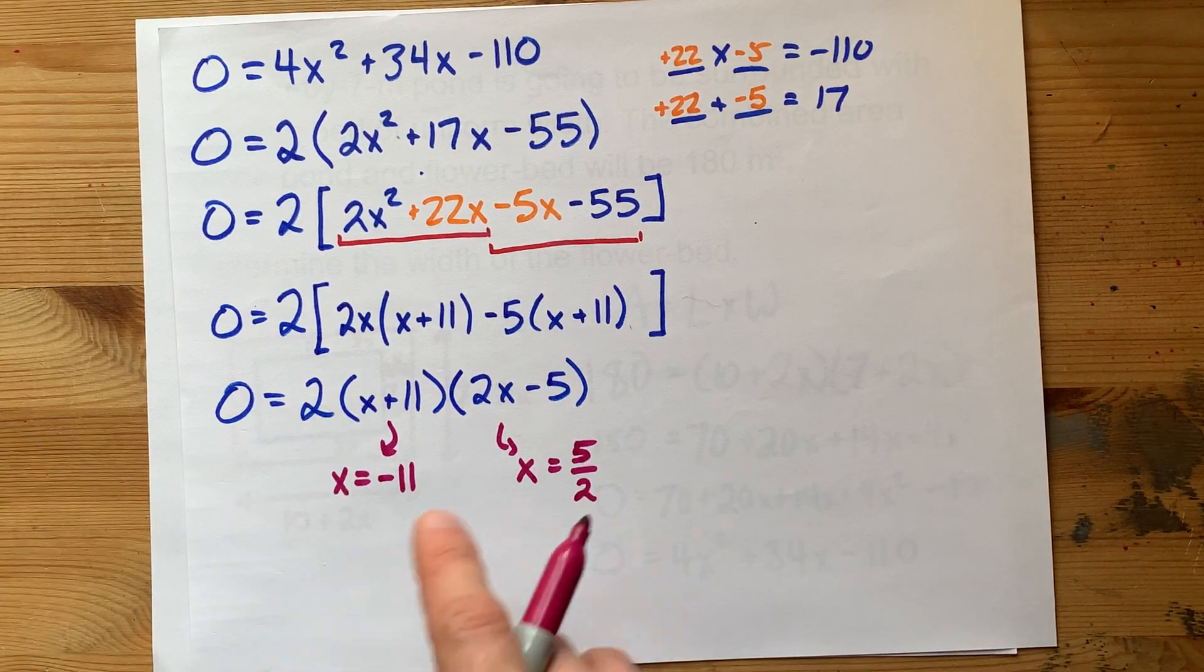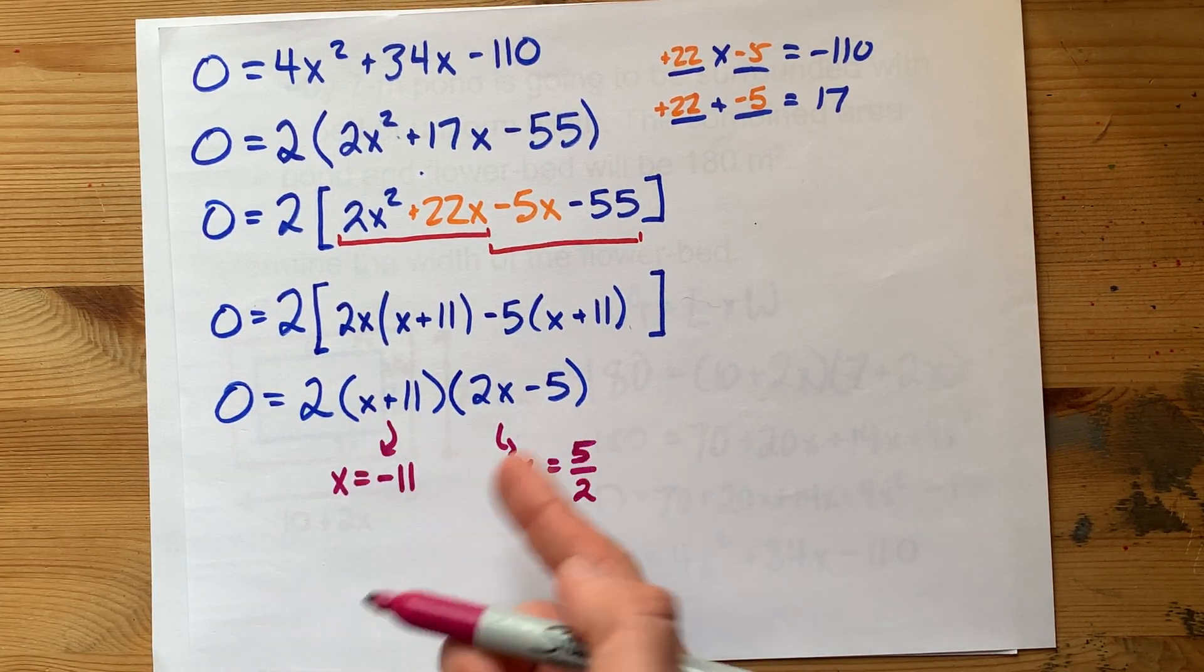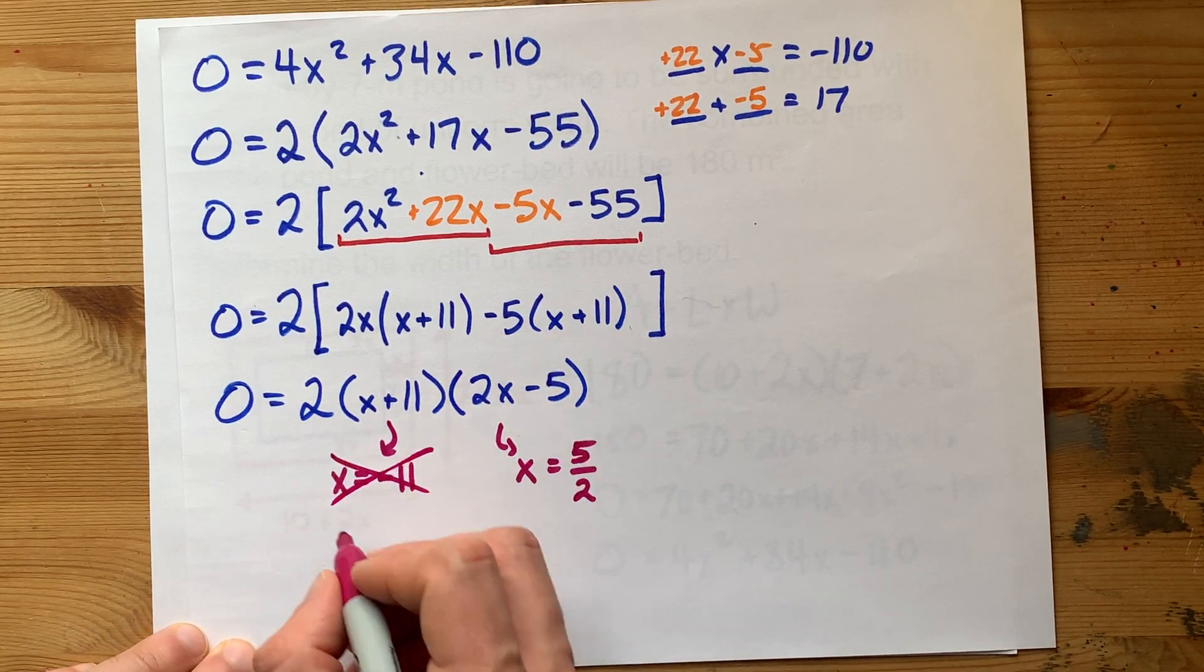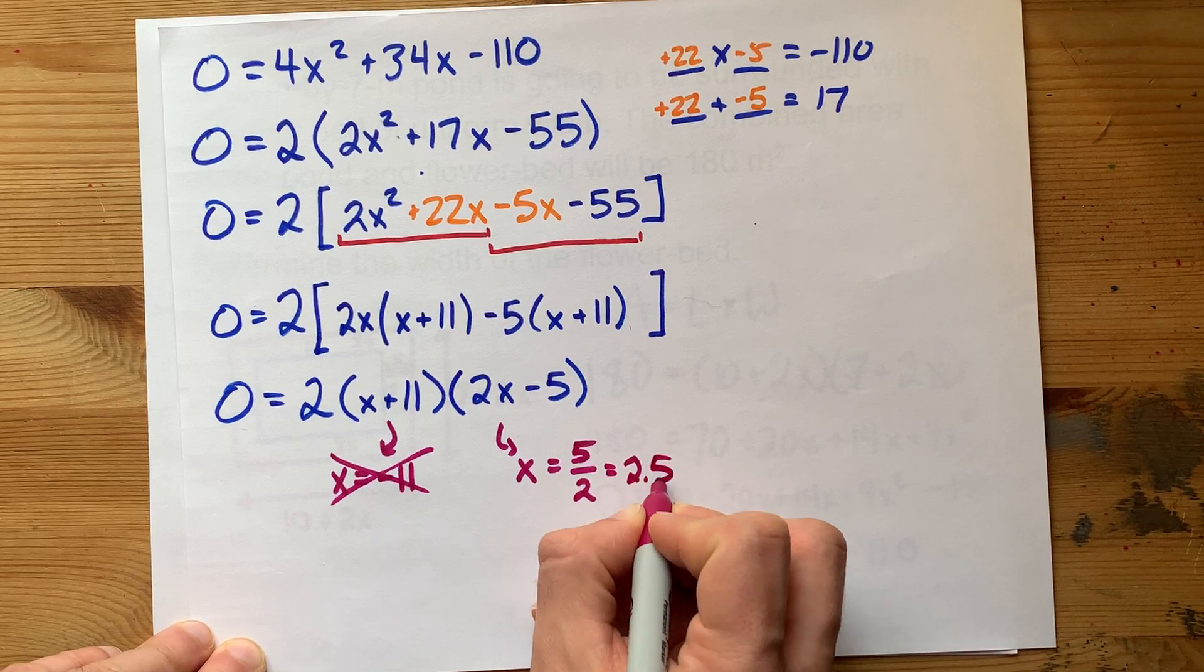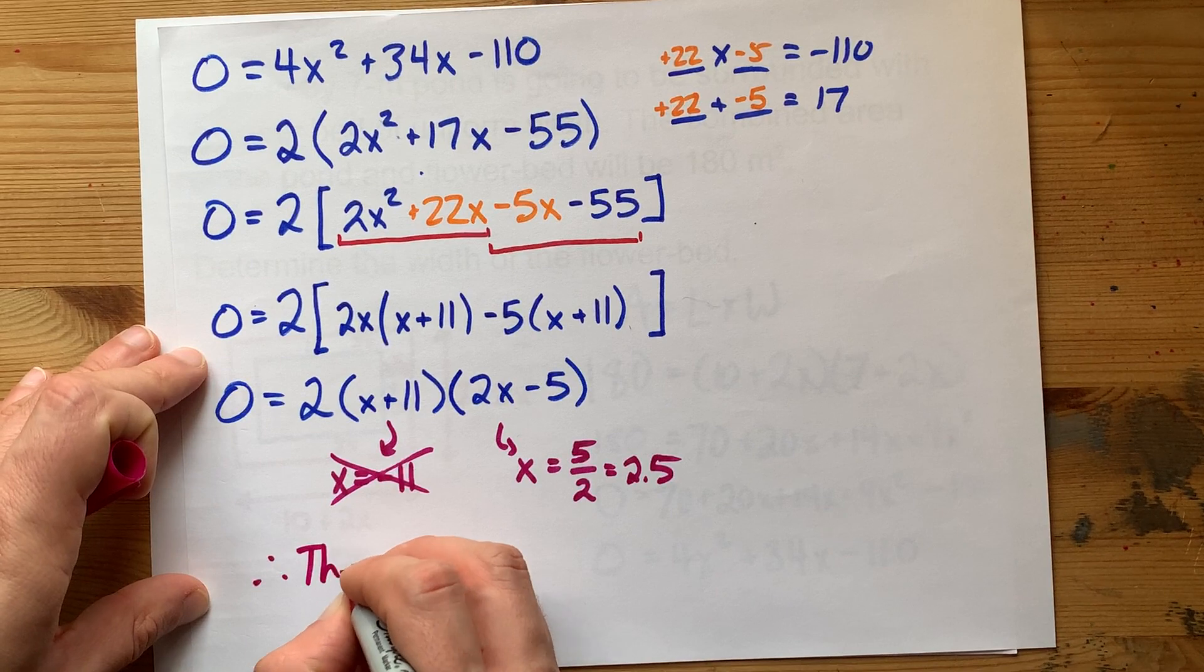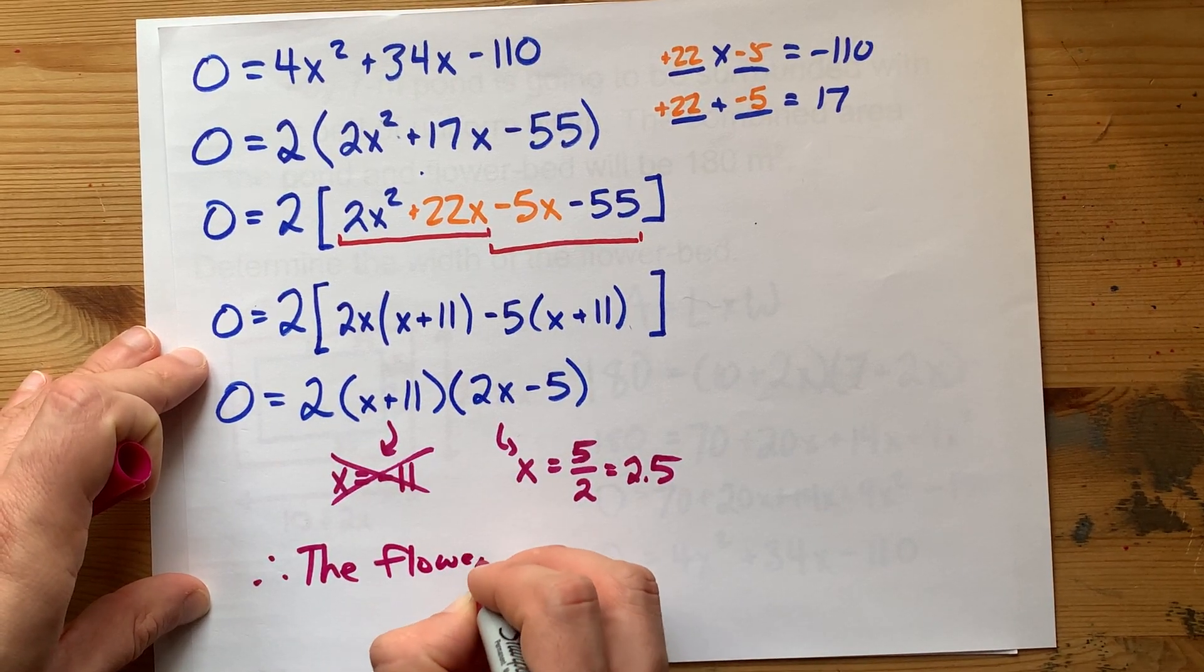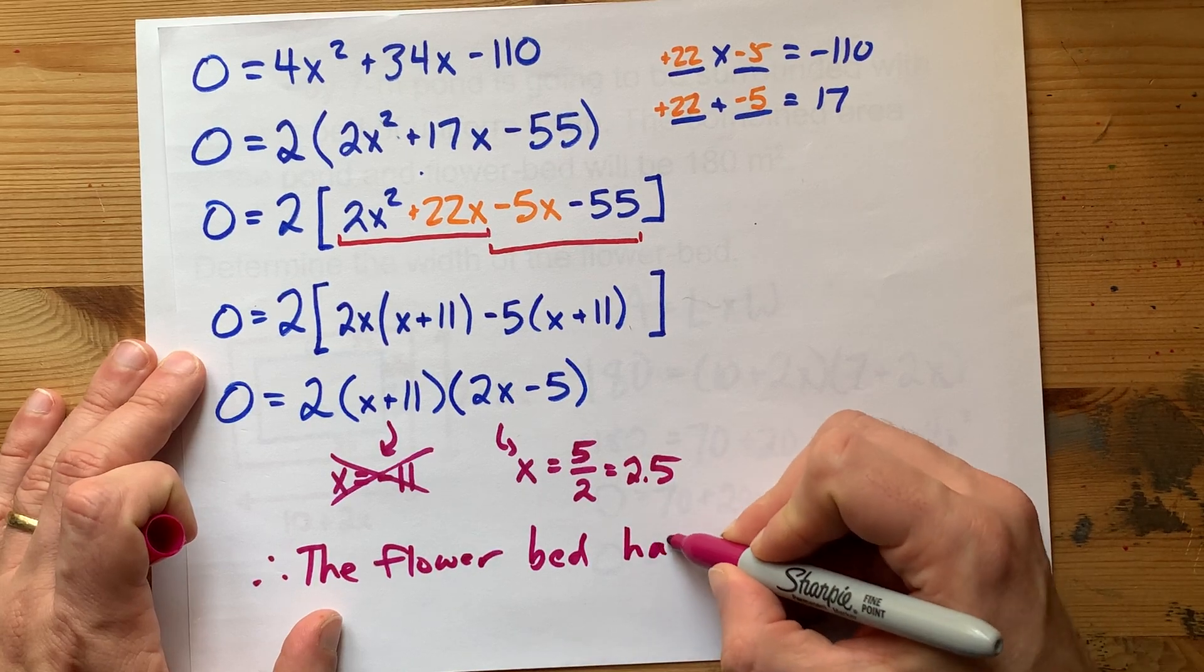Which of those is it? Can I add a flower bed of negative 11 meters? No, doesn't make any sense. Can I add a flower bed of 2.5 meters? Yes, that does make sense. Therefore, the flower bed that you are adding has a width of 2.5 meters.